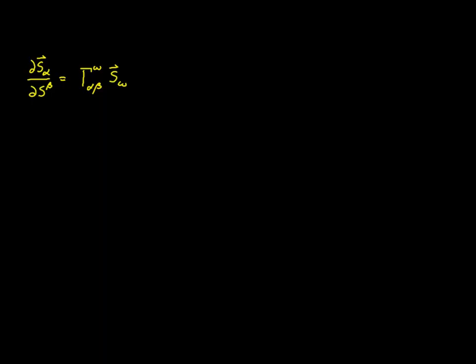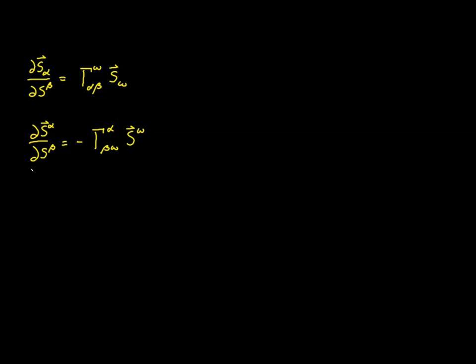Back in video 28, we introduced the Christoffel symbol using the expression shown here. Then later in video 32, we ran into a related expression and said we could use the same Christoffel symbol to represent it. These are very similar expressions — one index is on the bottom while the other is on the top; one is a covariant basis, the other a contravariant basis. We can use the Christoffel symbol for both expressions as long as we change the sign and adjust the dummy indexes accordingly.